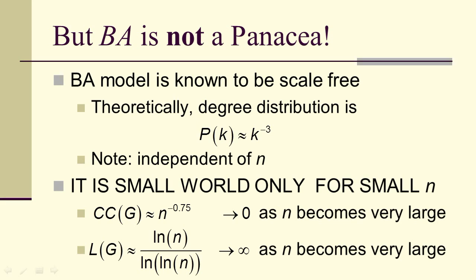But it's not a panacea. Theoretically, the degree distribution converges to K to the negative 3, which is independent of N. So actually, the BA model is always scale-free, but it's only small world for small N. The clustering coefficient goes approximately as N to the negative 0.75, which goes to zero as N becomes very large, whereas the shortest average path length goes to infinity as N becomes very large.